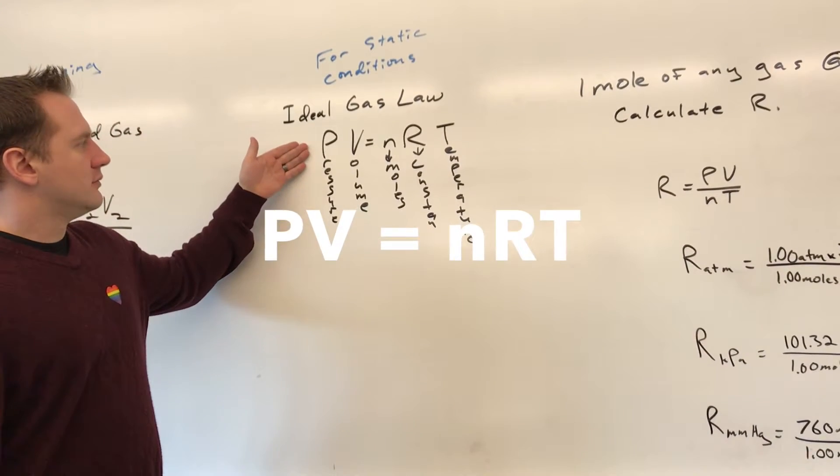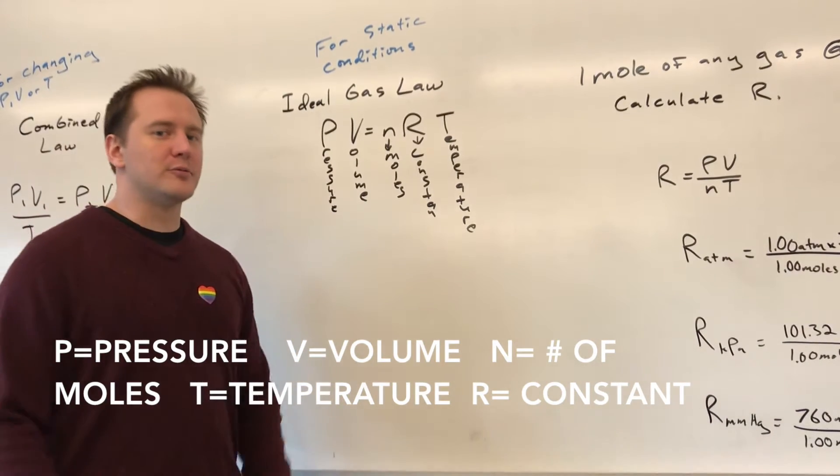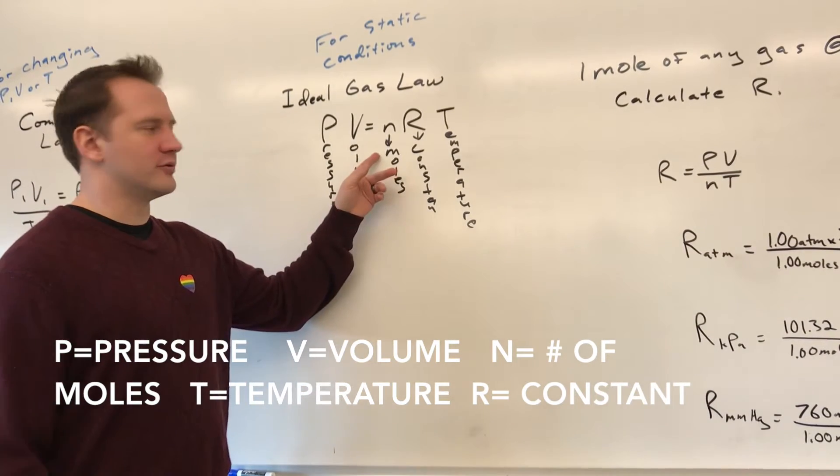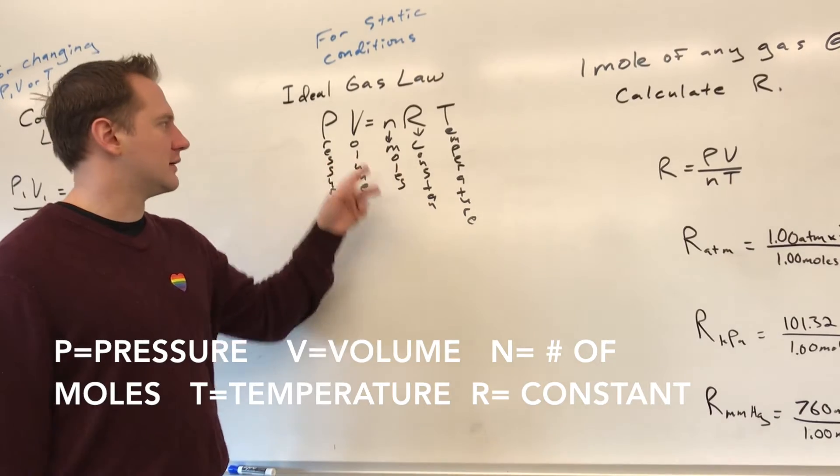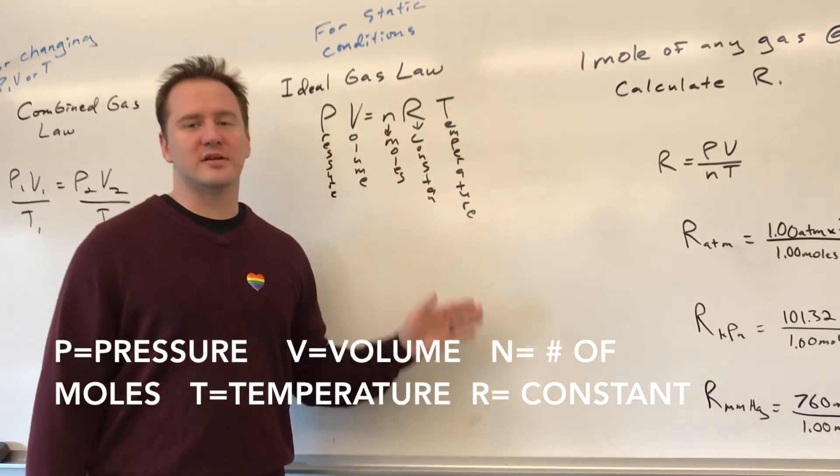So PIVNERT, P stands for pressure, V stands for volume, N, you probably wouldn't predict this, but it stands for the number of moles. M already represents mass, so it was taken, N is the best we could get. R is some constant, and T represents the temperature.